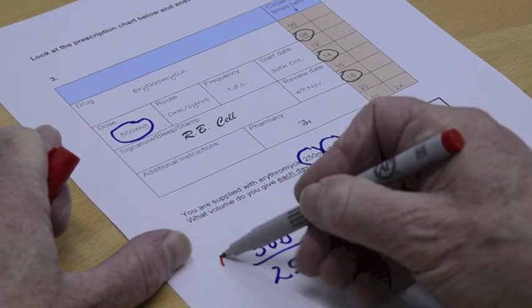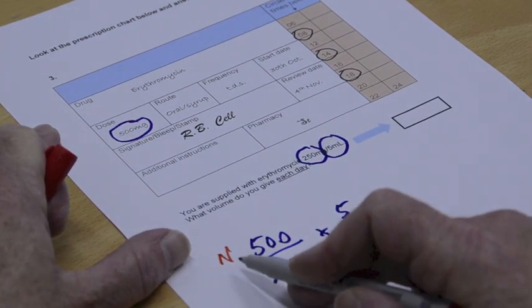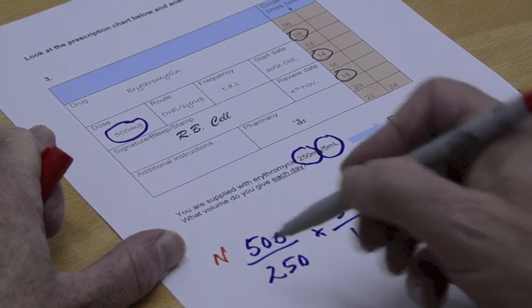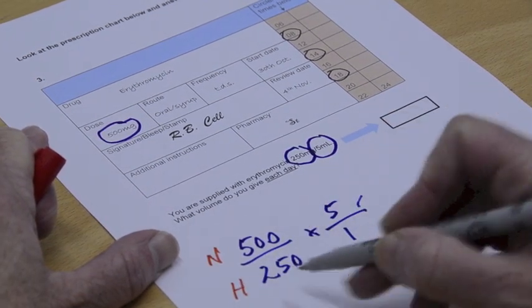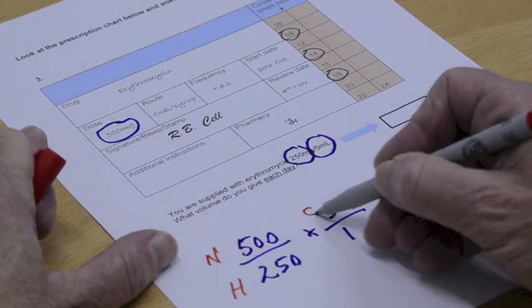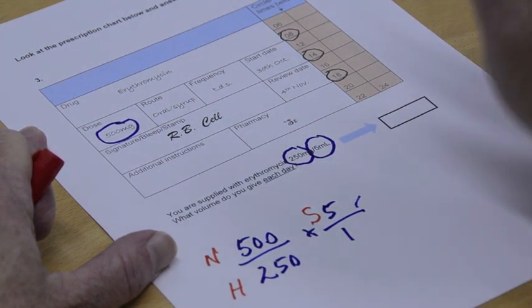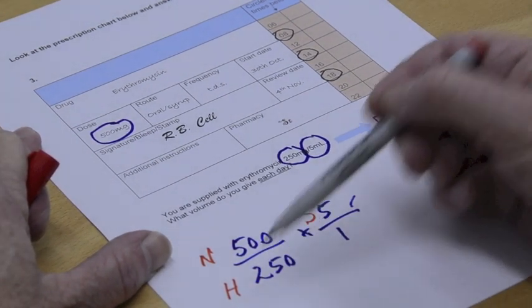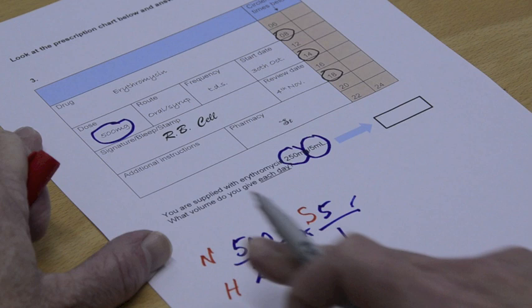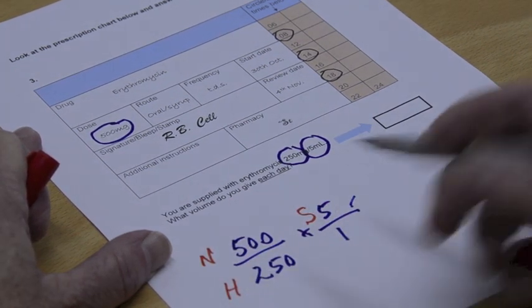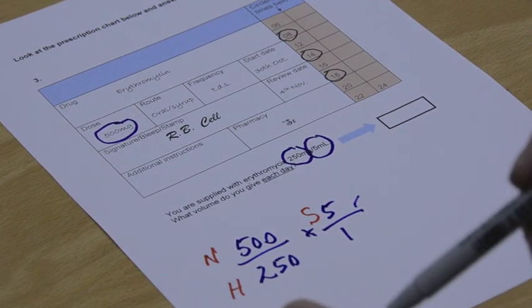Another way of looking at this is that the patient needs that, you have that, and it's in this fluid. You could use this aid memoir N for need, H for have, and this is the solution, or if you like NHS. So NHS need have solution is just a way of remembering.